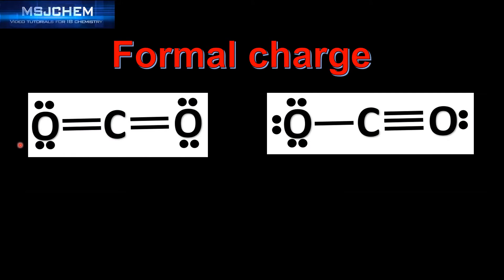Let's look at an example. Here we have two possible Lewis structures for carbon dioxide. In both Lewis structures the octet rule is followed for each of the atoms. In the structure on the left we have double bonds between the carbon and the oxygen atoms. On the right we have one triple bond and one single bond. Next we will calculate the formal charge on each atom to determine the preferred Lewis structure.